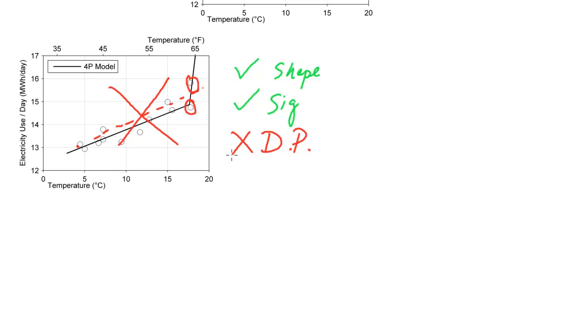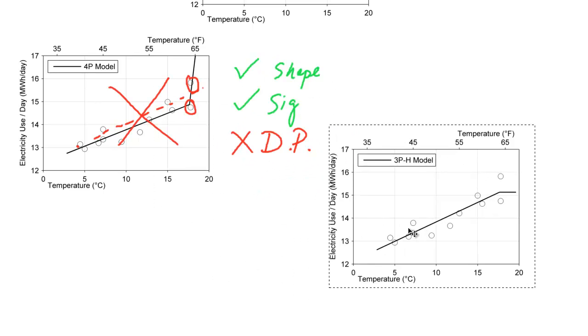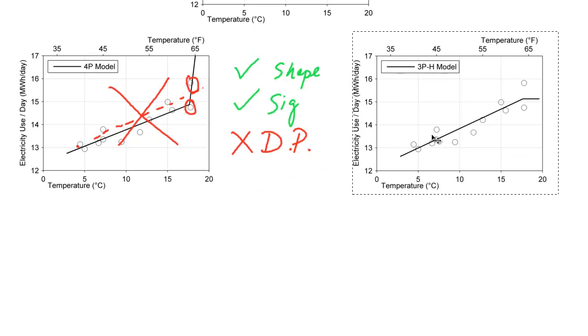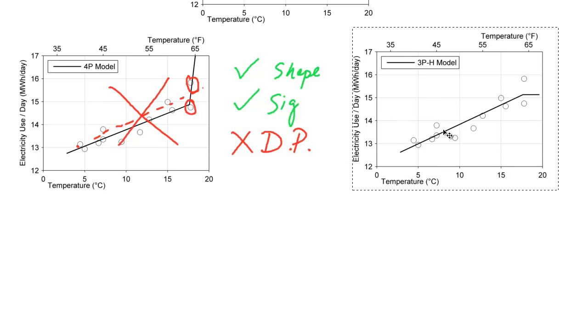So we move on to the next one. And now just for the sake of doing it, I'm going to bring in the 3P heating model first. Normally, it doesn't really matter. But here, this one, we'll go through them in our heads. The shape test? Nope, this doesn't pass the shape test. So we immediately could have X'd that one out. Significant? Yes. Data population? Yes, because we really don't care about this.